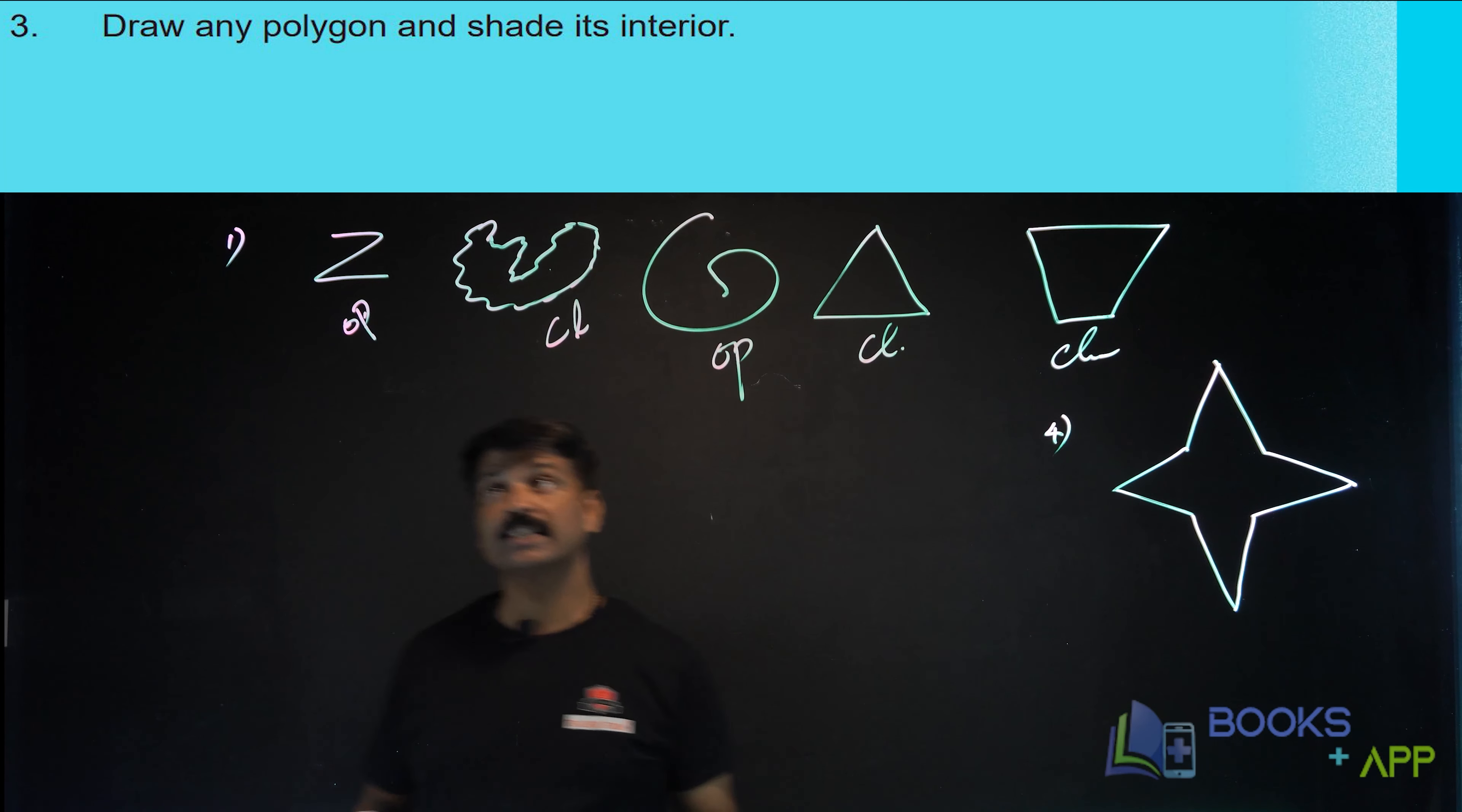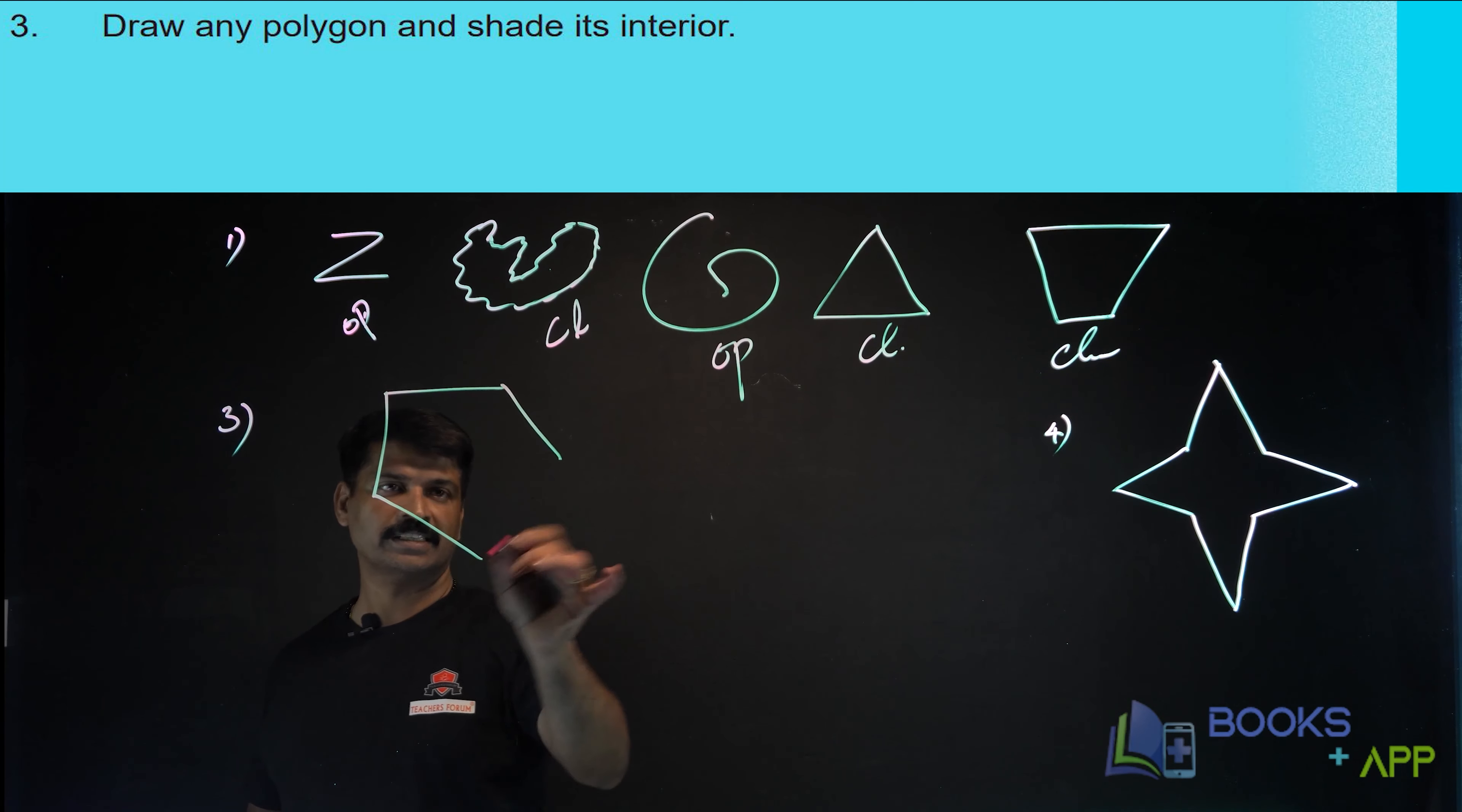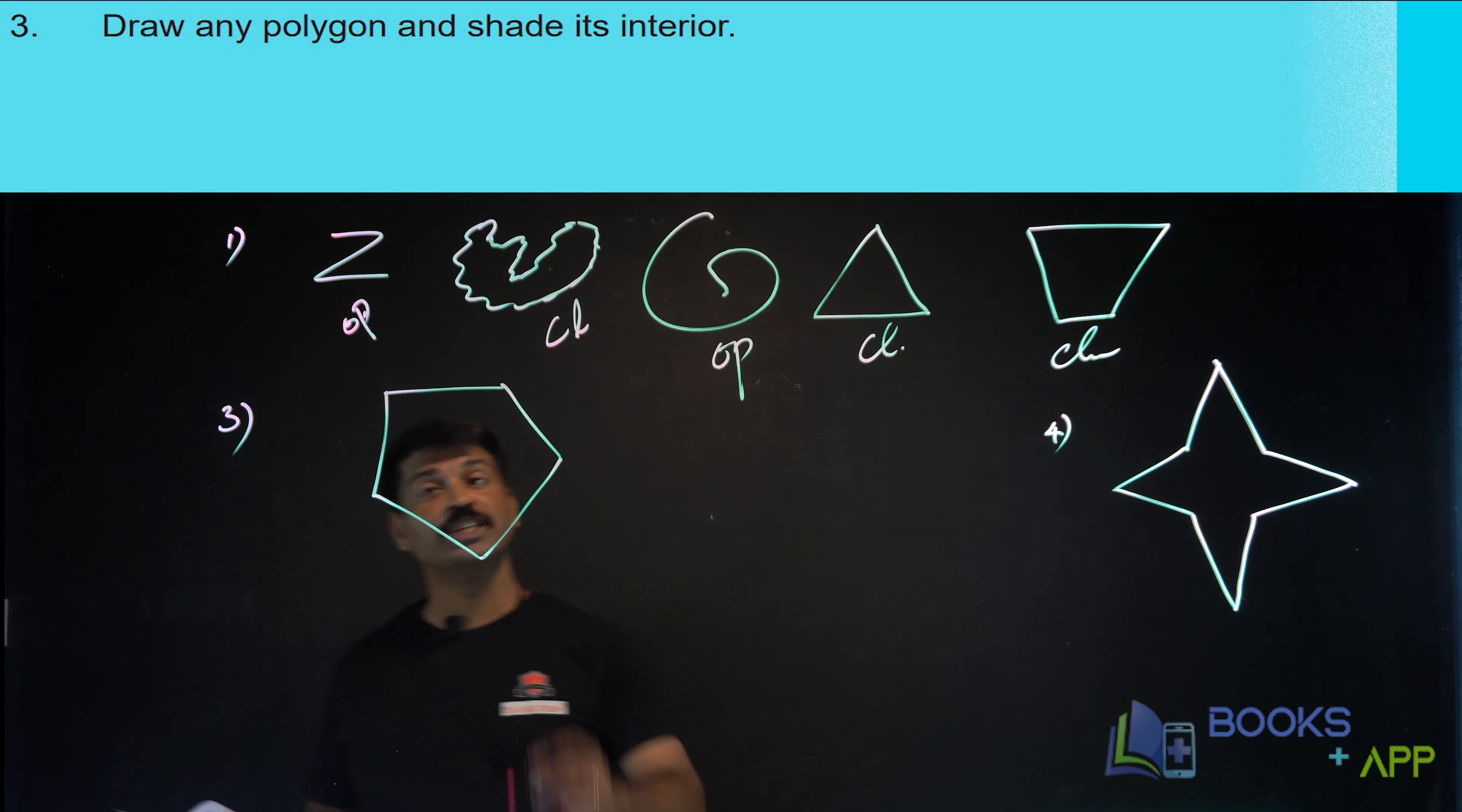Polygon means—yes, it is an example of a polygon. How many sides? One, two, three, four, five sides. So what do we call this polygon? It's a pentagon. Okay, now shade its interior.